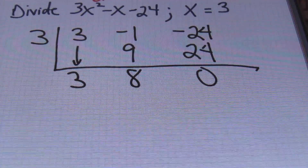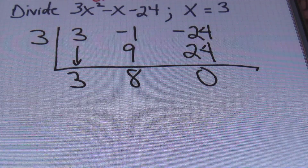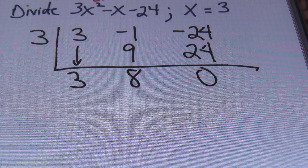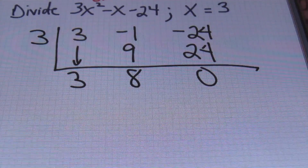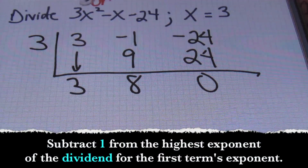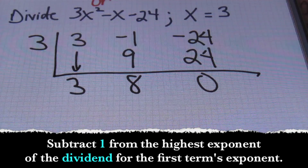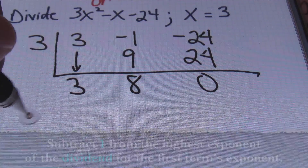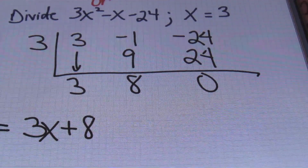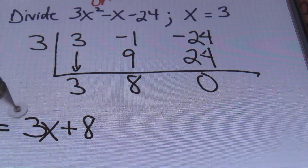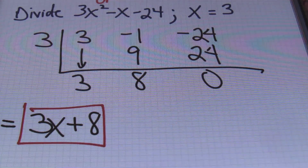From there, the process is as follows. You're going to bring down that first value. So my first value here is 3. Then you'll multiply: 3 times 3 gives me 9. And then from there, I combine the negative 1 and the positive 9 to give me a positive 8. Multiplying, I have 3 times 8, that gives me 24. And then the negative 24 and the positive 24 gives me a value of 0. Anytime this last value equals to 0, that means that the divisor went into the original dividend evenly. Remember that our highest exponent in the original expression was 2, so you're going to always take 1 away from that, and you'll write your result as follows: it will be 3x plus 8. That's the answer.